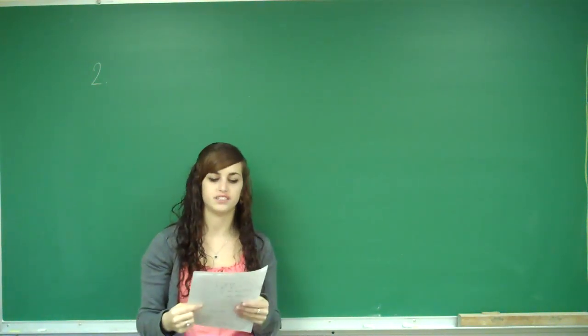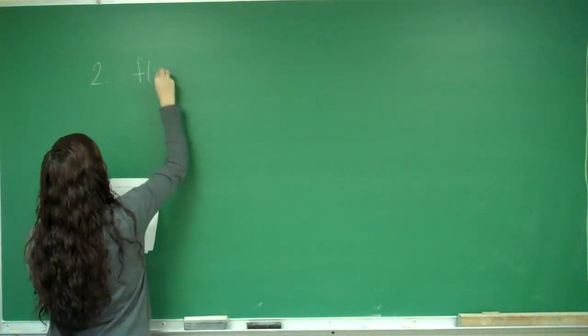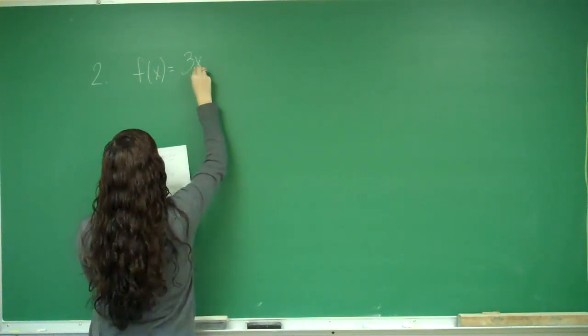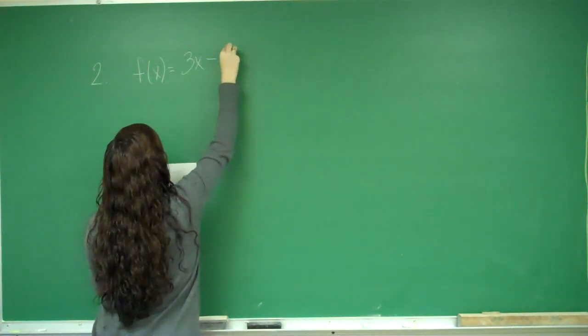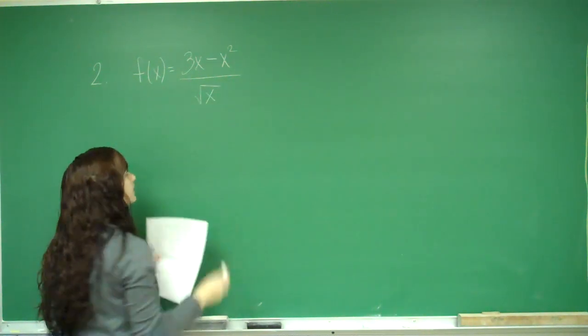find f prime of x and find the derivative of f if f of x equals 3x minus x squared over the square root of x.